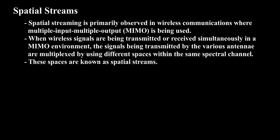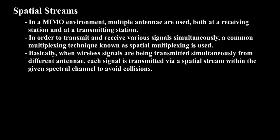Spatial streaming is primarily observed in wireless communications where Multiple Input Multiple Output is being used. When wireless signals are being transmitted or received simultaneously in a MIMO environment, the signals being transmitted by the various antennae are multiplexed by using different spaces within the same spectral channel. These spaces are known as spatial streams. In a MIMO environment, multiple antennae are used both at a receiving station and at a transmitting station. A common multiplexing technique known as spatial multiplexing is used. Each signal is transmitted via a spatial stream within the given spectral channel to avoid collisions.